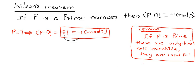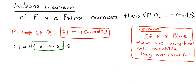How does 6 factorial become congruent to -1 modulo 7? We have 6! = 1 × 2 × 3 × 4 × 5 × 6. Grouping all elements except 1 and 6: 1 and 6 are self-invertible. The inverse of 2 modulo 7 is 4, so 2 × 4 ≡ 1 (mod 7). The inverse of 3 is 5, so 3 × 5 ≡ 1 (mod 7).